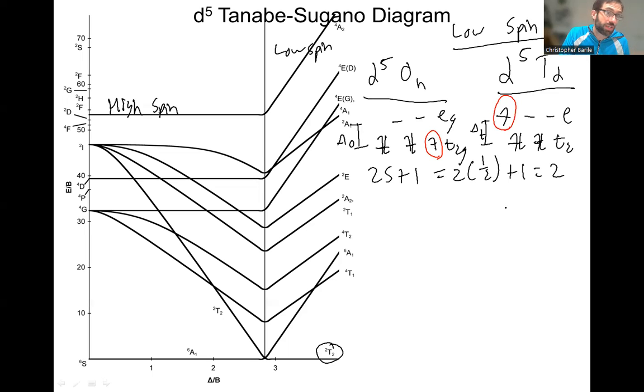We call a spin multiplicity of two, or we call it a doublet. Now let's go and look. Our ground state is a doublet T2G for the D5 octahedral case. We have to add the G because gerade for octahedral. Ground state is just doublet T2. We don't have the G because there's no inversion, no gerade or ungerade in tetrahedral.